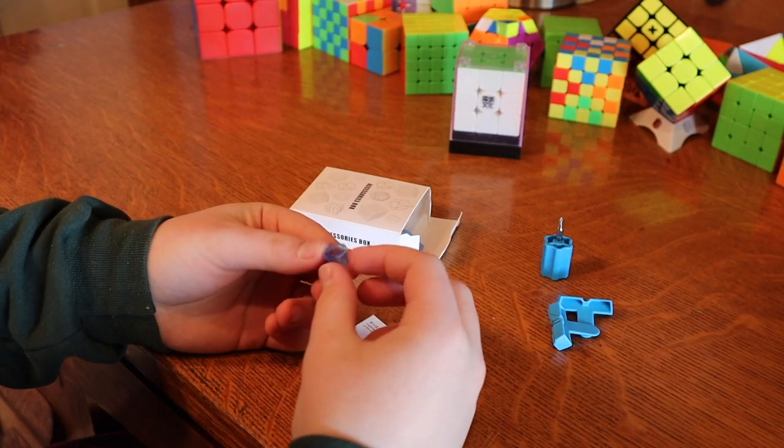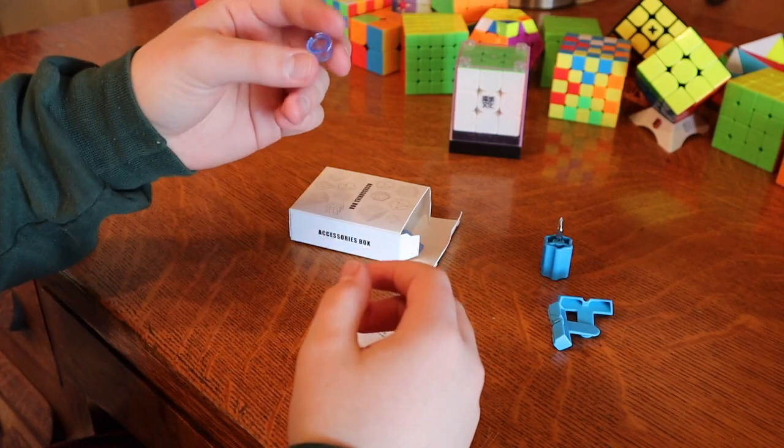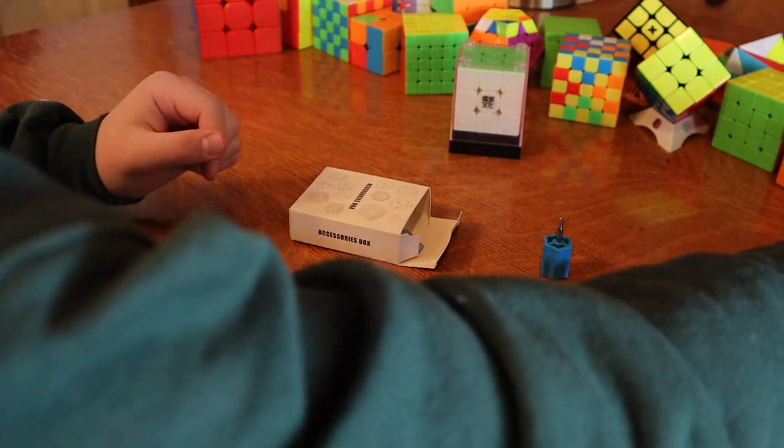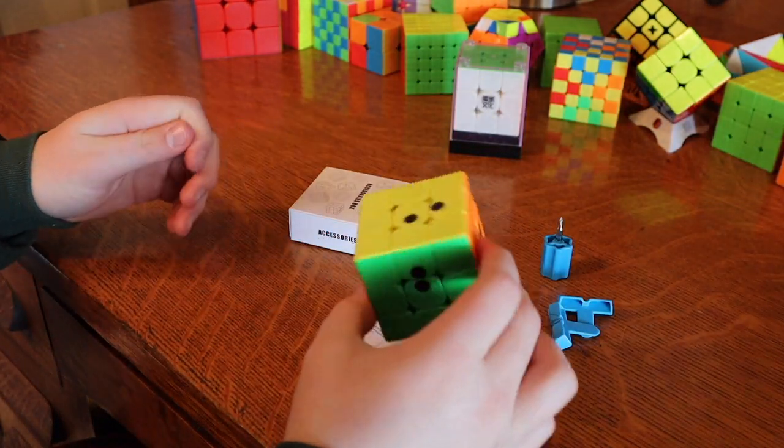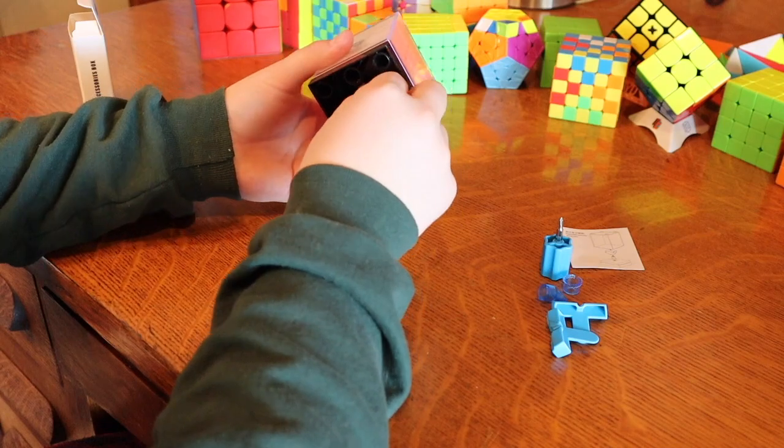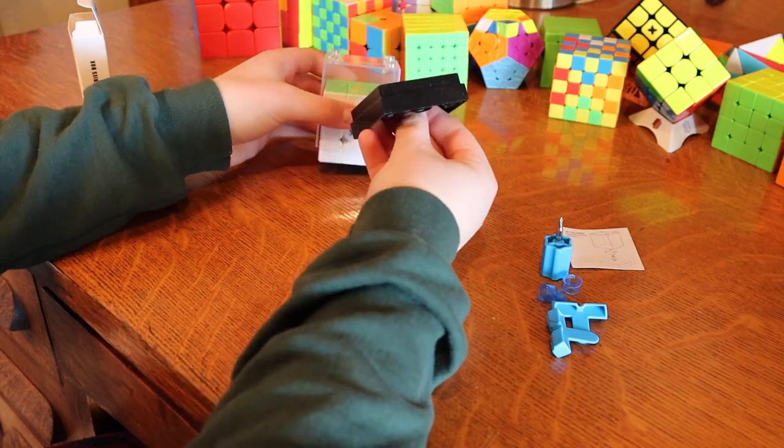So this is the same tensioning system as the RS-3M, which is right here. Don't mind the black stickers. I never bothered to take those off. There is a stand under this cube.